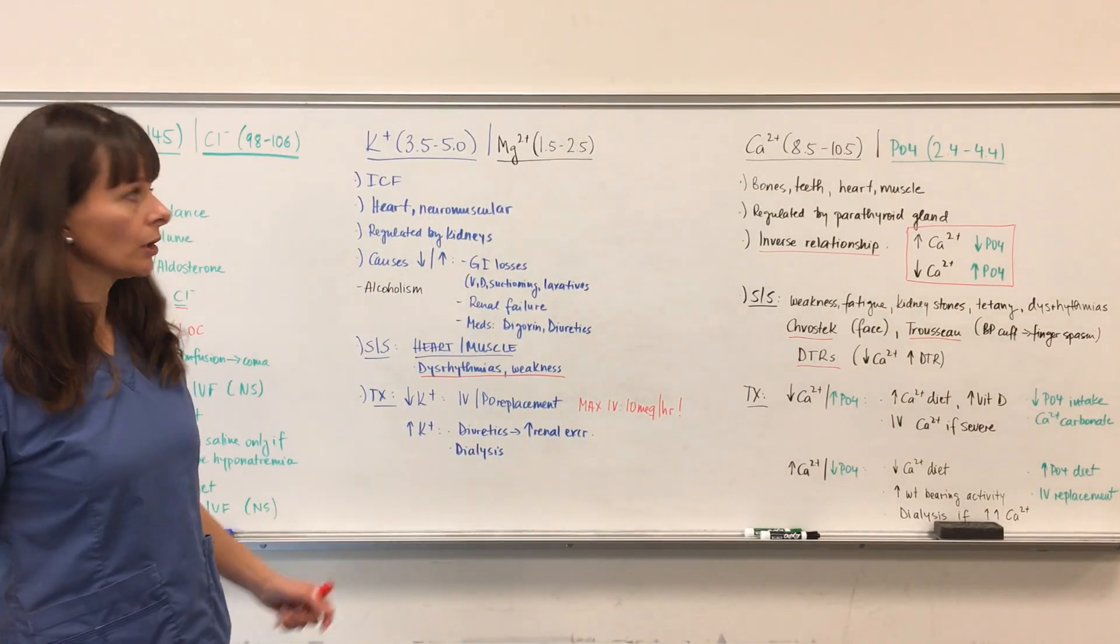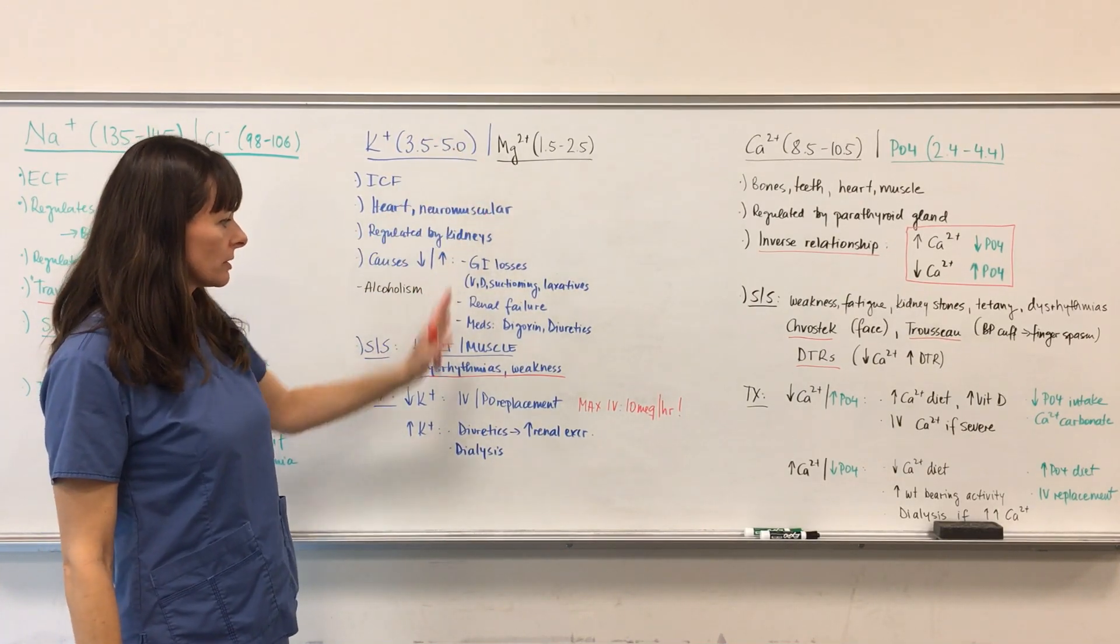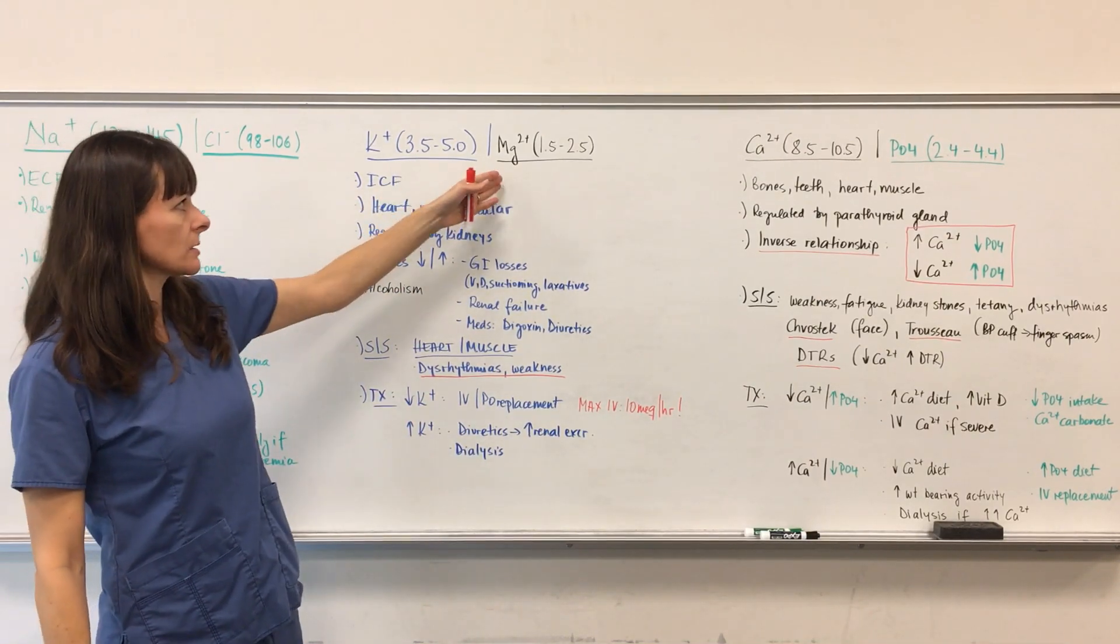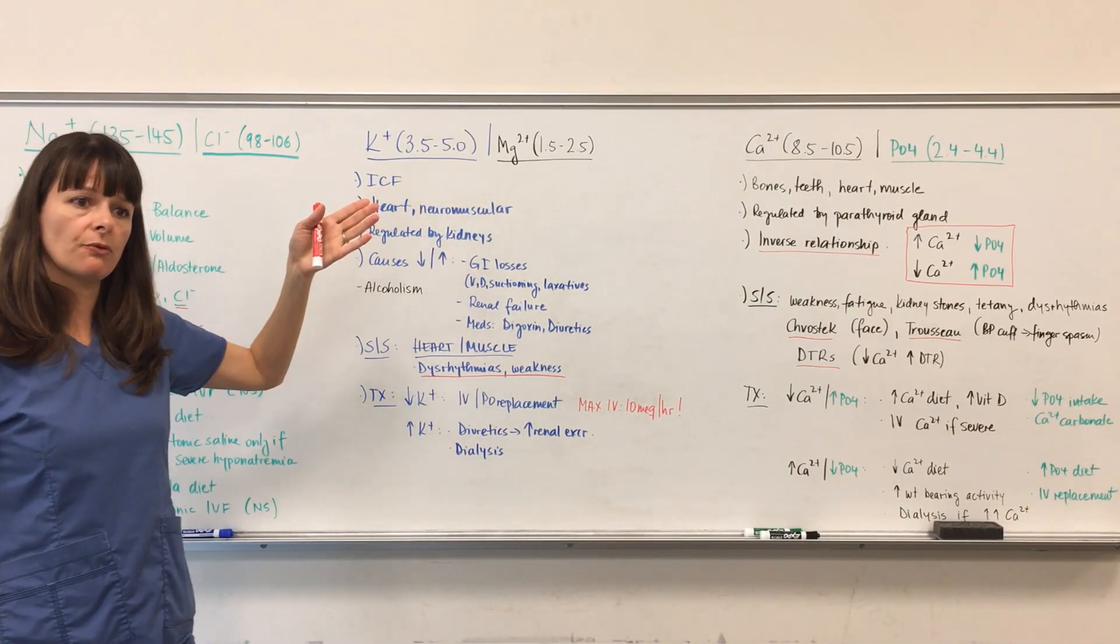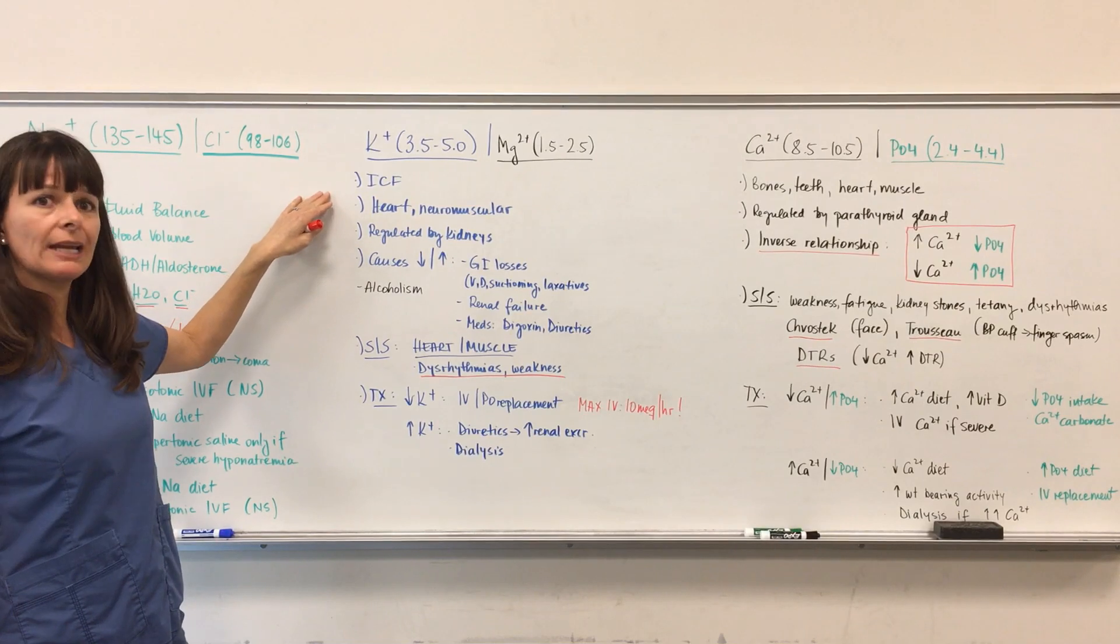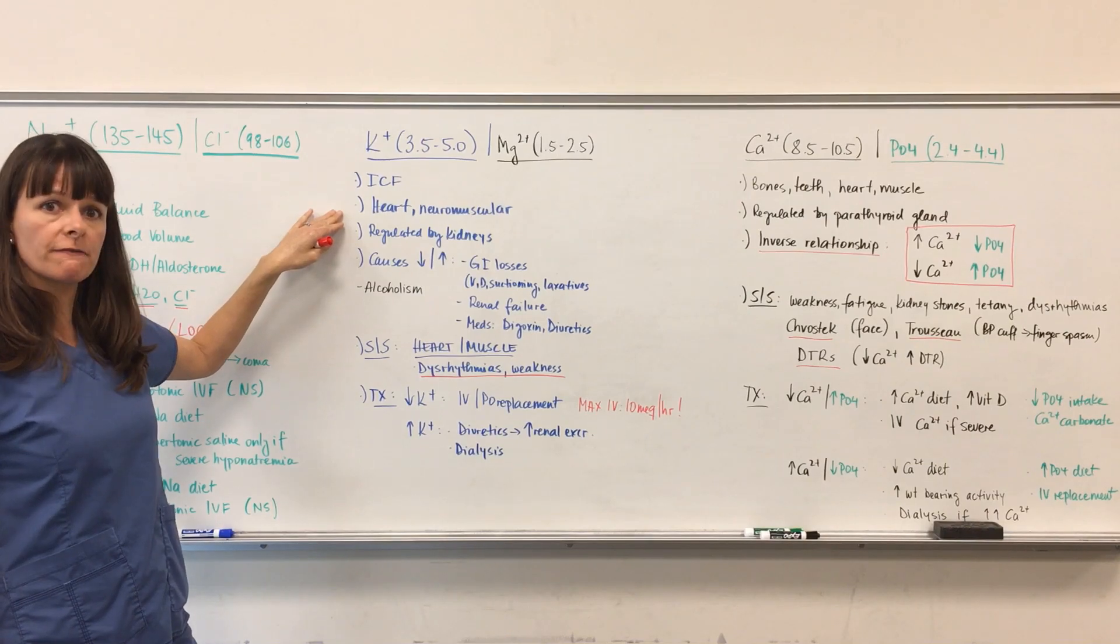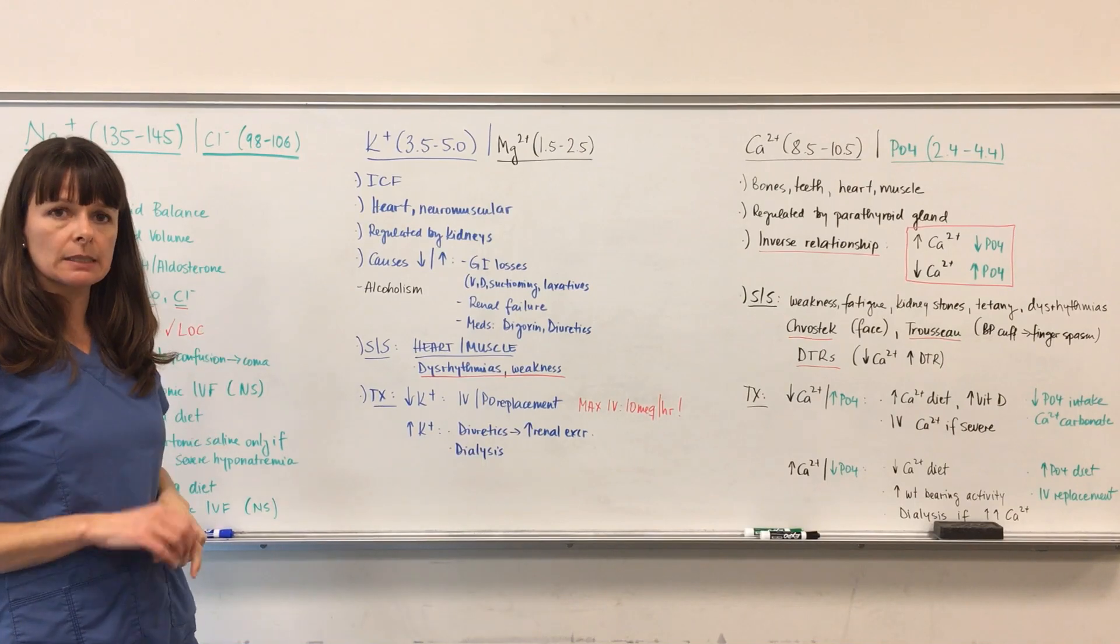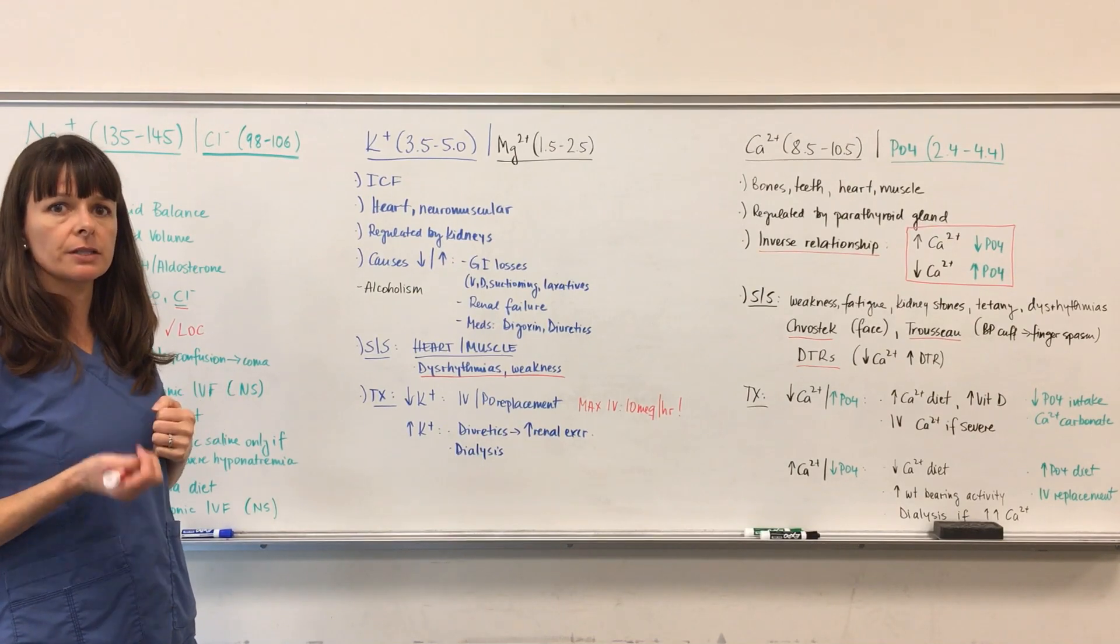Moving on to potassium and magnesium. I've color-coded this here, blue for potassium and black for magnesium. Again, general values up here, refer to your textbook or professor regarding normal values. Potassium is a major intracellular electrolyte. It helps us regulate heart function and the neuromuscular junction. Think about sodium and potassium channels as it pertains to the contraction of muscle, whether that's the heart or skeletal muscle.